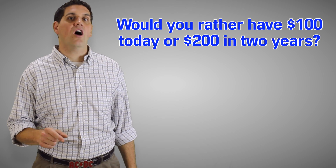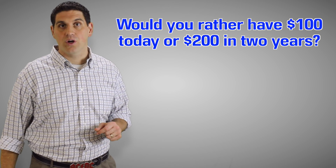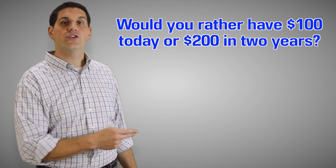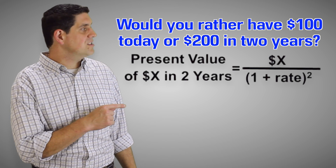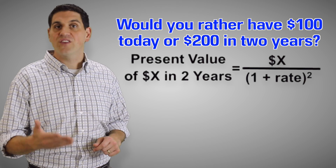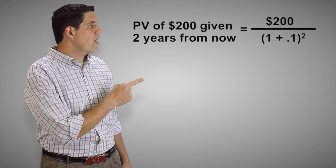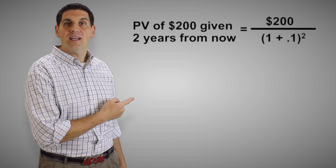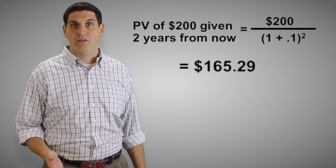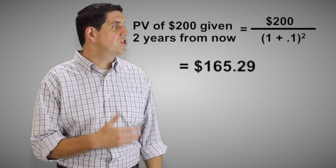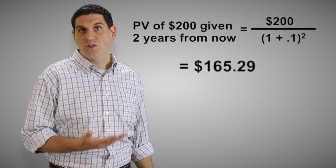Now let's go back to the original question. Would you rather have $100 now or $200 in the future? Let's assume the interest rate is still 10% and I'll give you $200 two years from now. Use the equations shown earlier to calculate the present value of $200 in two years and find out if it's a good deal. The present value of $200 two years from now is $200 divided by 1 plus 0.1 squared, and that comes out to a little over $165. So in that situation, you should definitely take the $200 in the future because the present value is more than the $100 I would give you today.